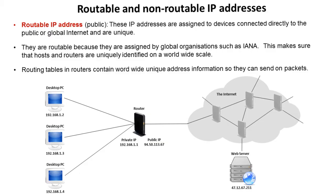In this simple abstracted diagram, on the left-hand side we have a private company network, and on the right-hand side we have the open internet. All the IP addresses here would be our public routable addresses.